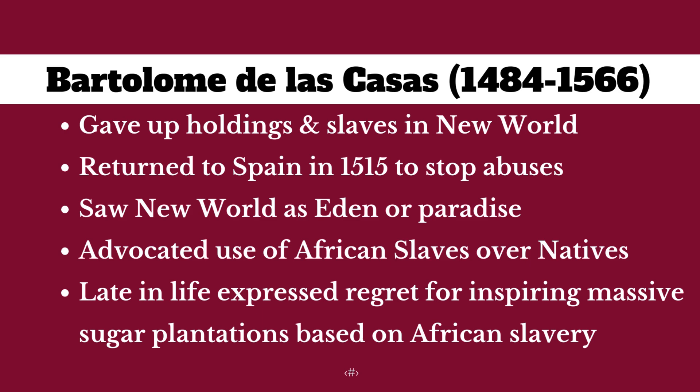He understands these people should be trained and taught to be the equals of the Spaniards. So he returns to Spain, gives up his lands, joins the church, and argues that the New World is an Eden or paradise — and that instead we should use African slaves. At no point does he say we should get rid of plantations — it's understood that plantations are necessary. The indigenous people are weak, they die, they're sickly, they can't be made to work. We should strengthen and Christianize them, and in their place bring African slaves.